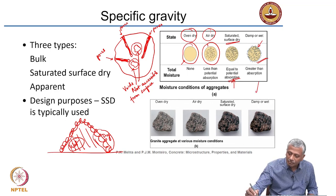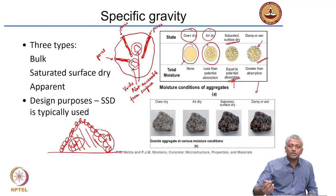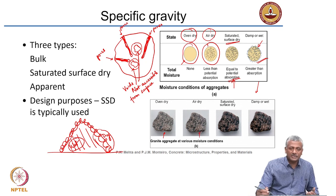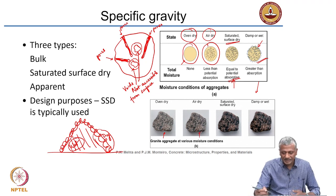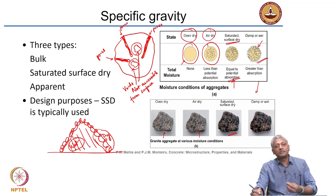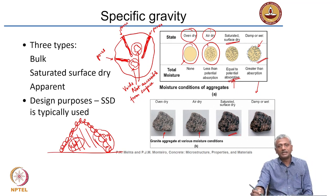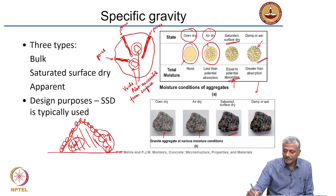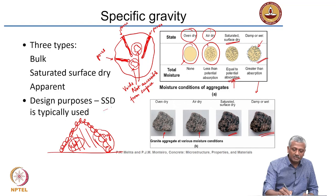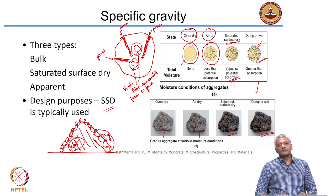These states of moisture are also shown in this picture. There is an oven dry state, an air dry state which has some moisture less than the absorption level, a saturated surface dry state where it looks darker meaning more moisture at the level of absorption, and a wet aggregate which has a lot of wetness on top. For design purposes, we typically use the saturated surface dry weight of the material.